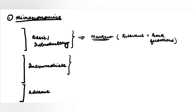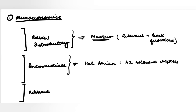For intermediate microeconomics, you have to refer to Hal Varian. All relevant chapters have to be done from this. Plus, you also have to do the entire workbook of Hal Varian. Every chapter that you cover has to be followed by the workbook.